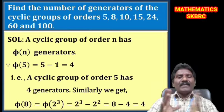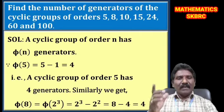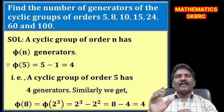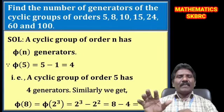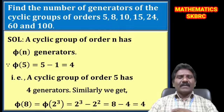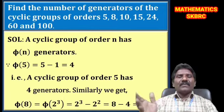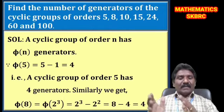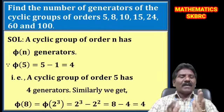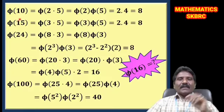φ(8) = φ(2³). Since φ(p^n) = p^n − p^(n−1), we get φ(2³) = 2³ − 2² = 8 − 4 = 4. Therefore, a cyclic group of order 8 has 4 generators.